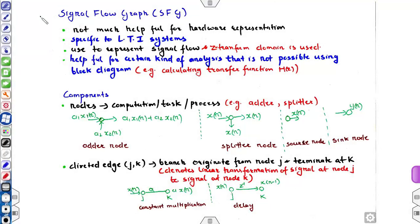Moving to the next graphical representation form: the signal flow graph, or SFG. It is not very helpful for hardware representation and is specific to linear time-invariant systems, whereas block diagrams are not restricted to LTI systems and can represent any kind of system — linear, non-linear, single rate, or multi-rate. The signal flow graph is useful for representing signals in the Z-transform domain, which allows important analyses such as calculating the transfer function HZ for any circuit.